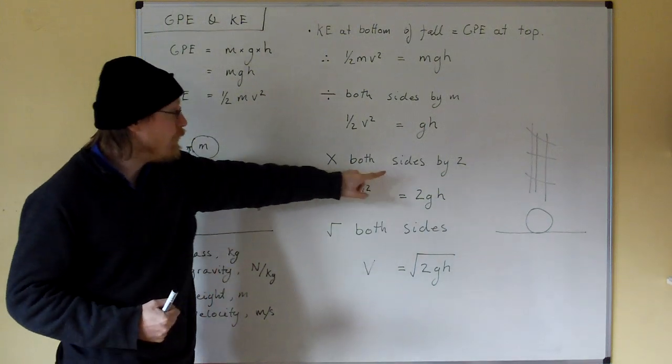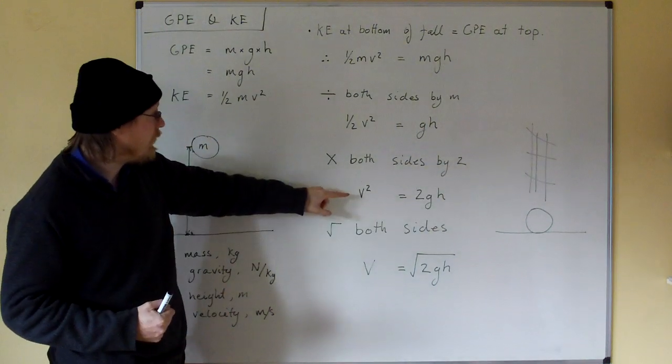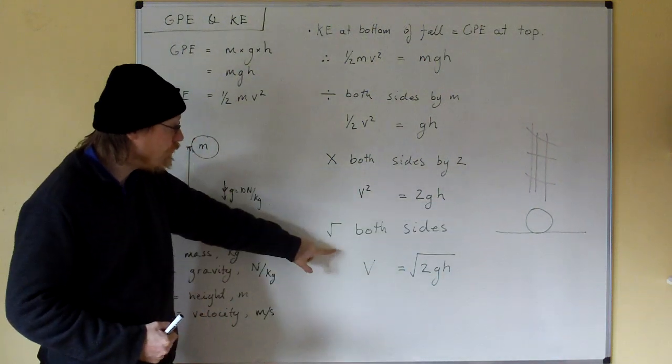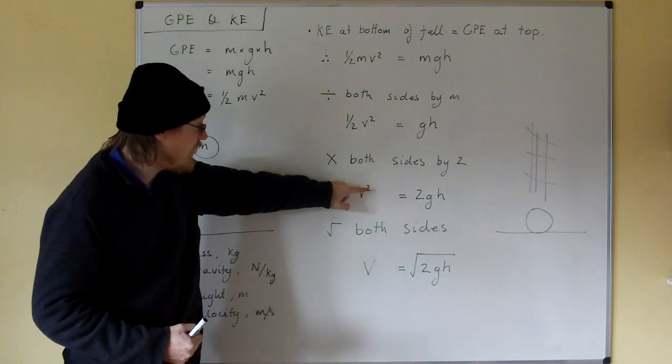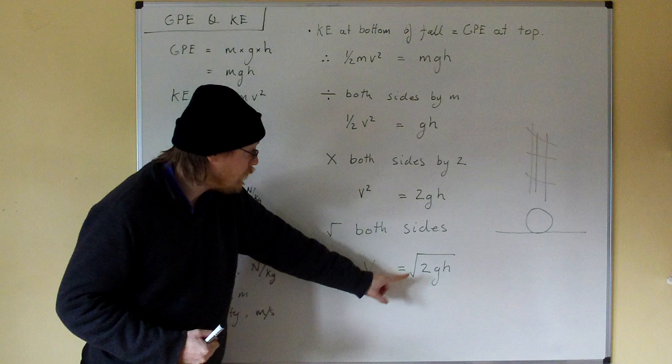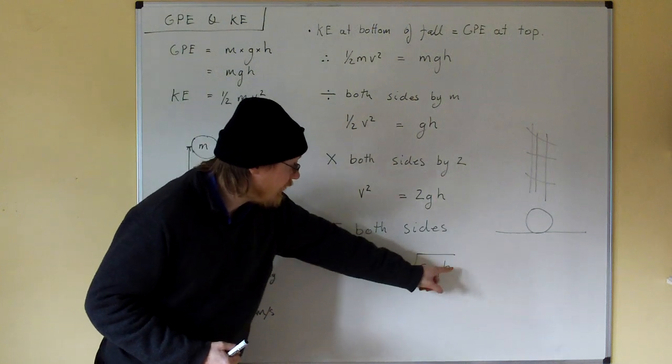Times both sides by 2. So we get v squared on this side, and 2gh on this side. Finally, square root both sides to get rid of the v squared. We get v equals the square root of 2gh.